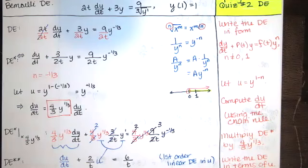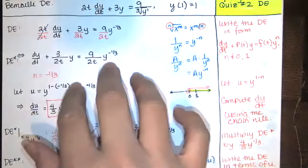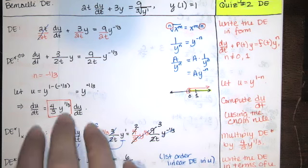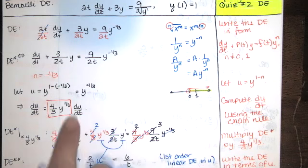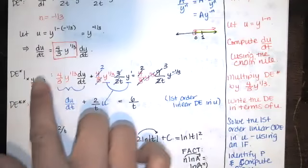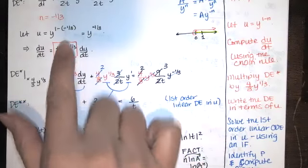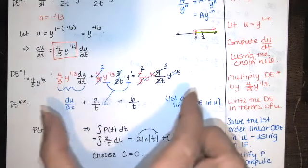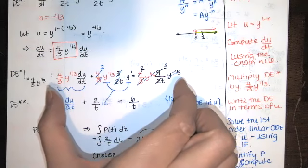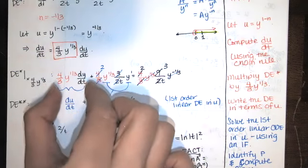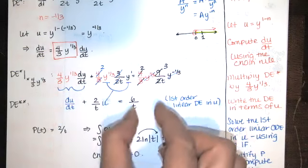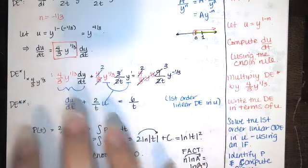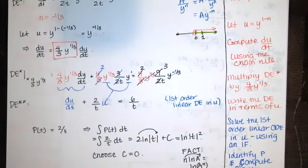In order to do that, write the differential equation in the standard form for Bernoulli. Let u equal y to the 1 minus n. Compute du/dt — you're going to have this extra factor. Take your differential equation and multiply by that extra factor. When you do, that differential equation can be rewritten in terms of u by substitution: this piece is du/dt, this piece is a function of t times u, this piece is just a function of t. It will always work out that way.